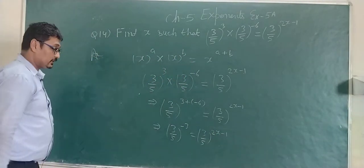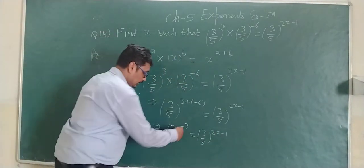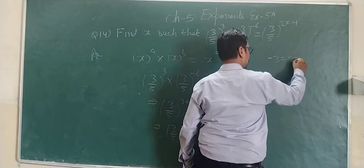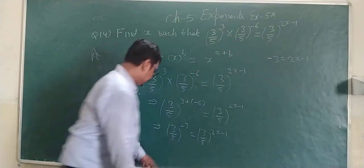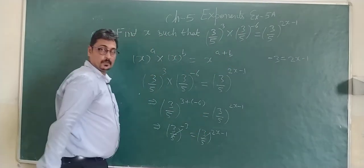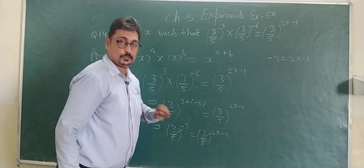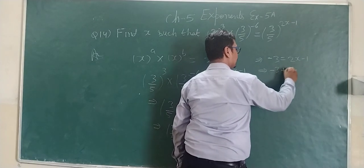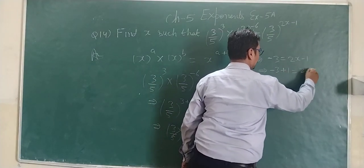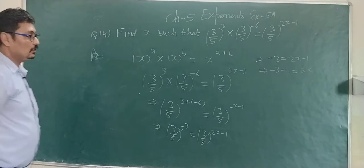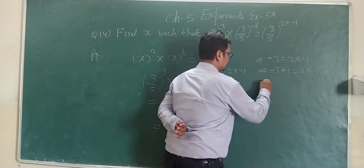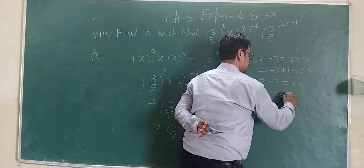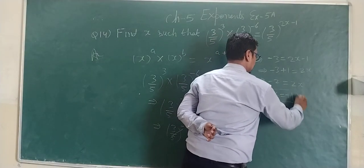On equating the powers we get minus 3 equals 2x minus 1. This becomes minus 3 plus 1 equals 2x, or minus 2 equals 2x, giving the value of x as minus 1. This is the answer.